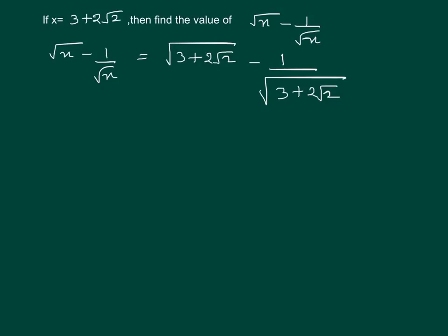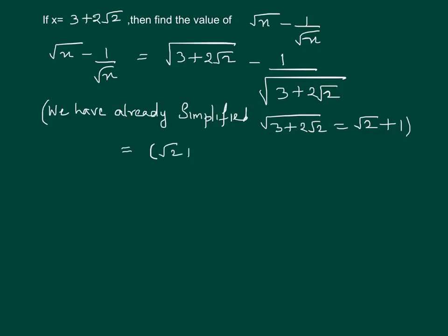We just explained that √(3 + 2√2) can be simplified and the value comes out to be √2 + 1. So here we can directly substitute the value, we get √2 + 1.